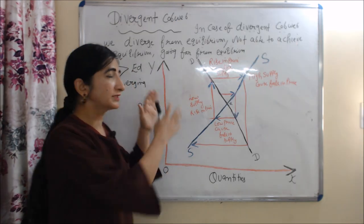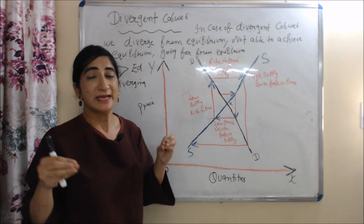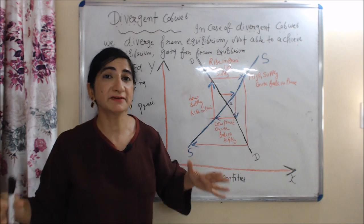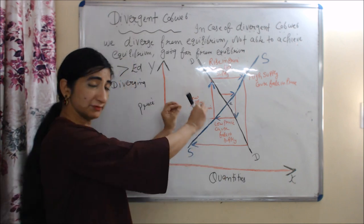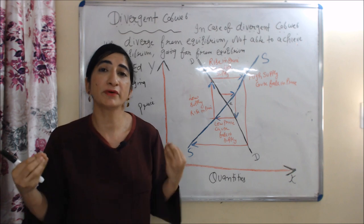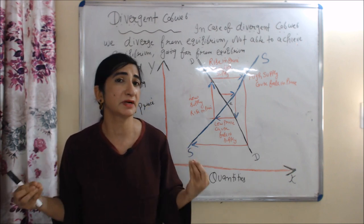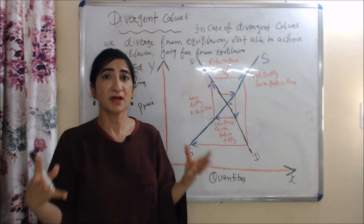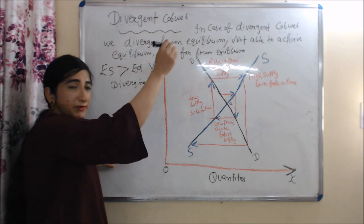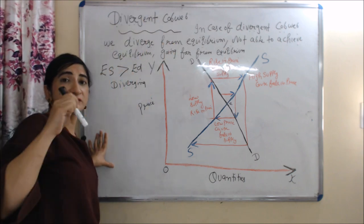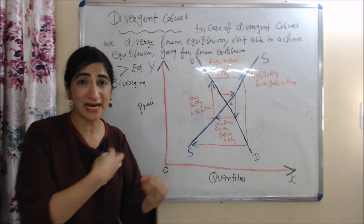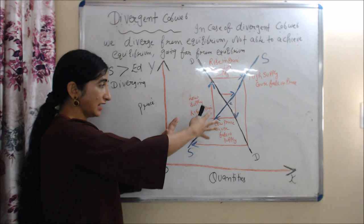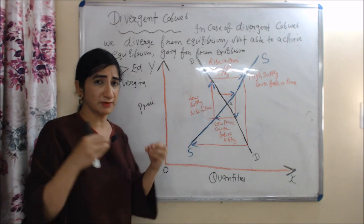Now we talk about divergent cobweb. In the case of divergent cobweb, we diverge from our equilibrium — means we are not able to achieve equilibrium, we are going far from our equilibrium. This is because in the case of divergent cobweb, our elasticity of supply is more than elasticity of demand — that's why we are diverging from our equilibrium.